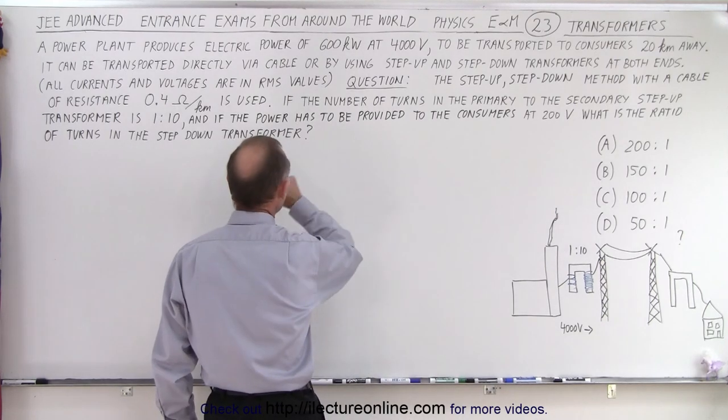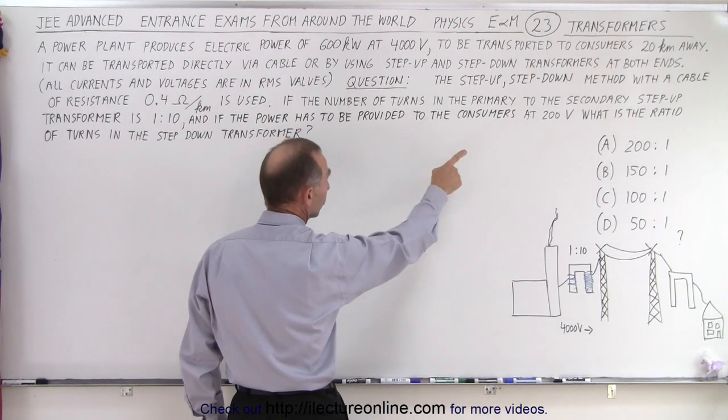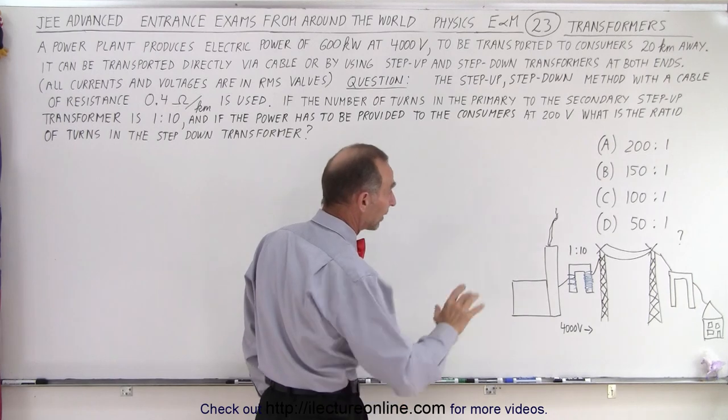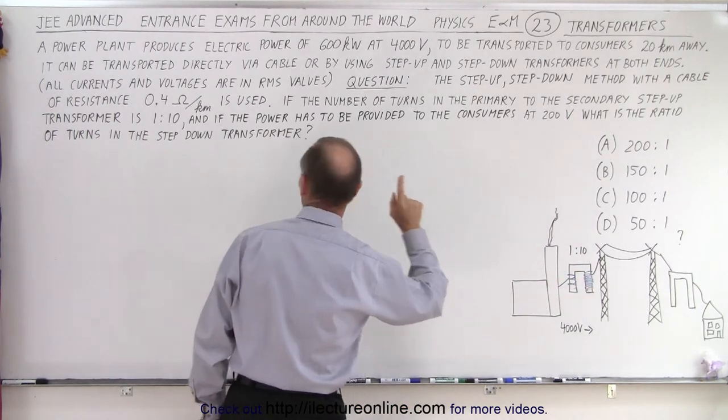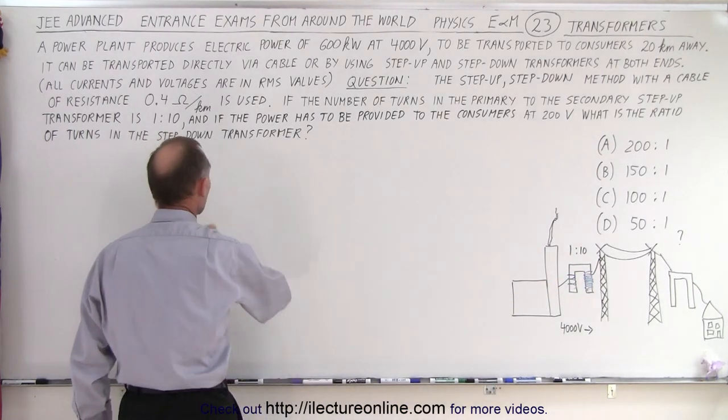and if the power has to be provided to the consumers at 200 volts at the far end, what is the ratio of turns in the step-down transformer?